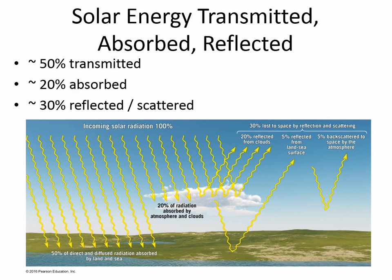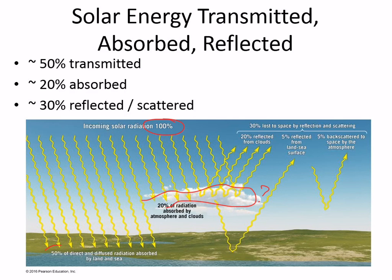The yellow represents radiation coming from the sun — all different energies. If you figure 100 units coming from the sun, with an average cloud coverage, about 50% of the energy makes it to the Earth's surface, about 20% is absorbed by the clouds, and 30% is lost to space.